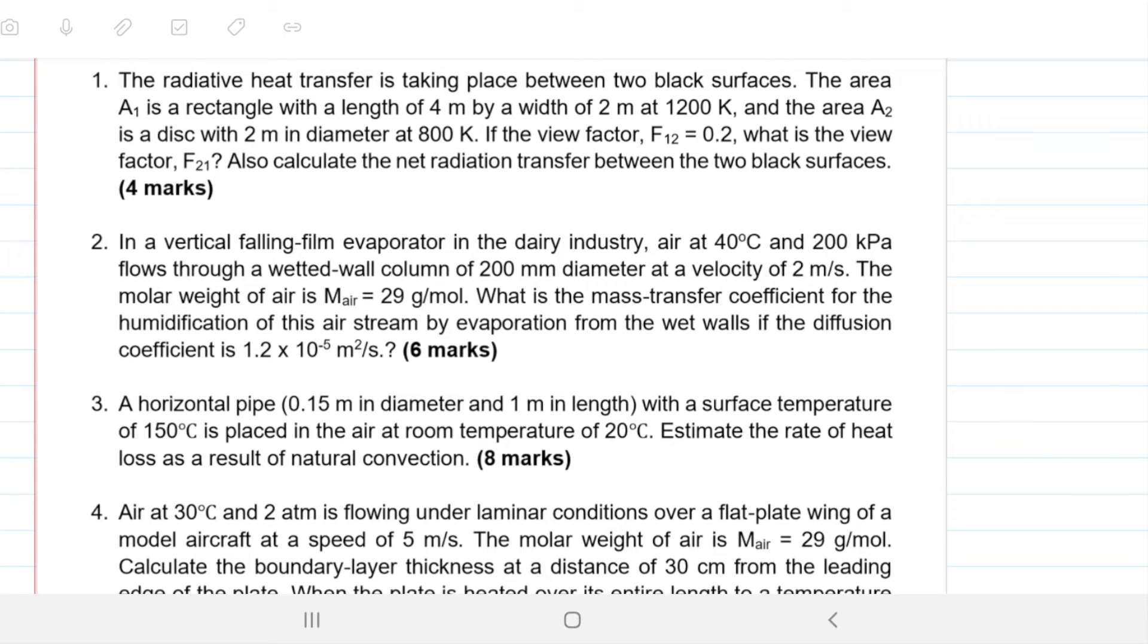So first question reads, the radiative heat transfer is taking place between two black surfaces. The area A1 is a rectangle with the length of 4 meters and a width of 2 meters at 1200 Kelvin. And the area A2 is a disc with 2 meters in diameter at 800 Kelvin. If the view factor F12, that is how much the first one sees the second, how much the rectangle sees the disc, what is the view factor? Also, calculate the net radiation transfer between the two black surfaces.